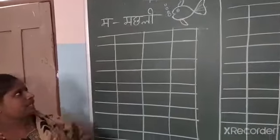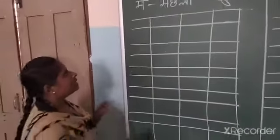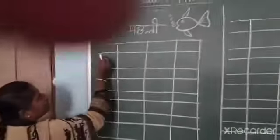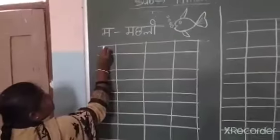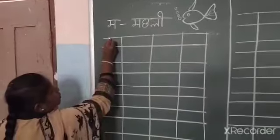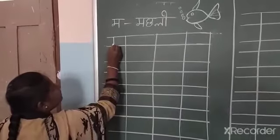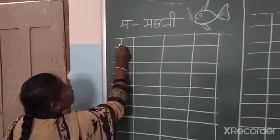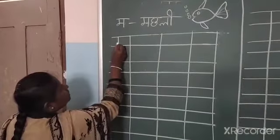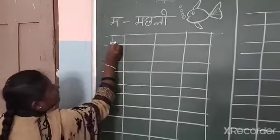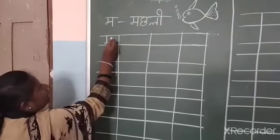Merse Machali. See, children — how to write म? First, you draw one standing line, then make one knot and drag this line.